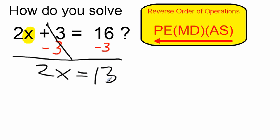Now to take care of my multiplication division, I'm going to divide both sides by 2. On the left, 2 divided by 2 cancels, leaving me with 1x or x is equal to 13 divided by 2.